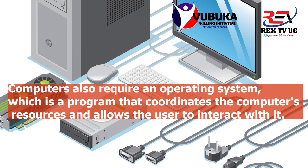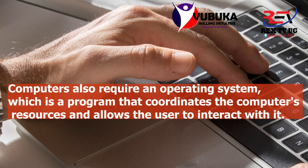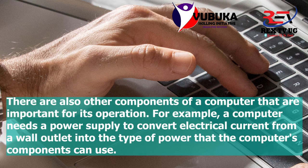A computer also requires an operating system, which is a program that coordinates the computer's resources and allows the user to interact with it. The operating system is a set of instructions. There are many types of operating systems — we have iOS and the Windows operating system, which is the most used operating system all over the world. They coordinate the computer's resources and allow the user to interact with the computer.